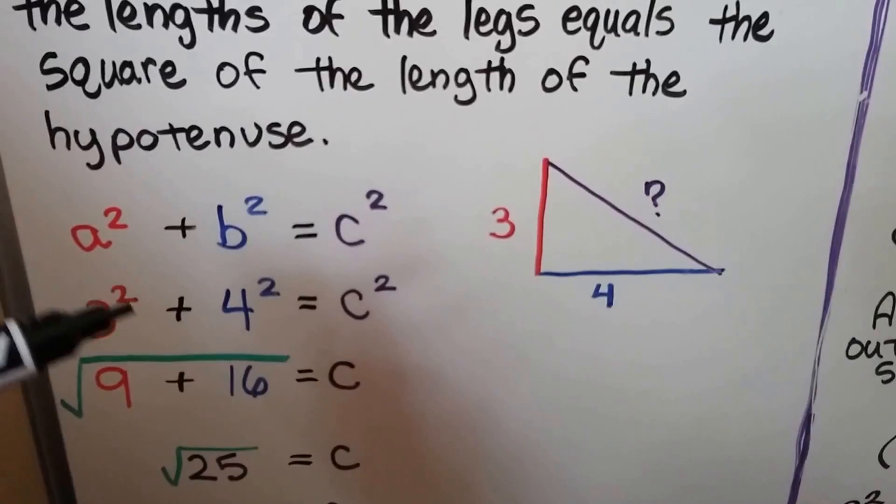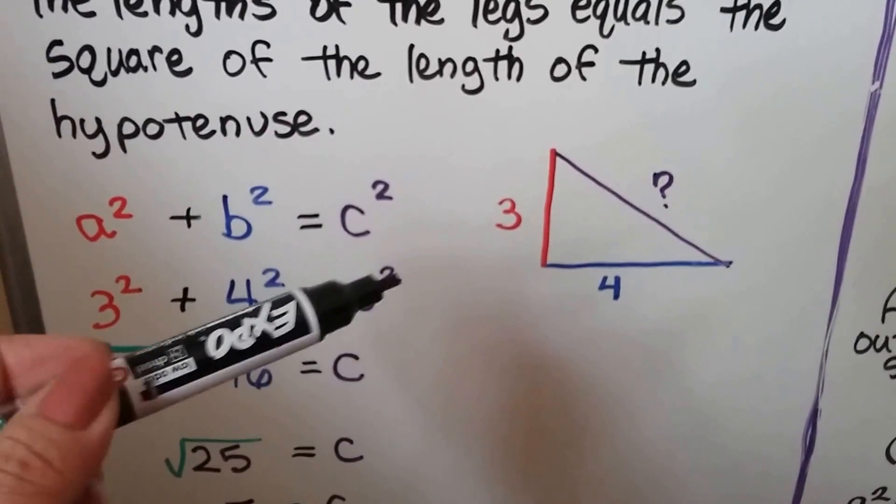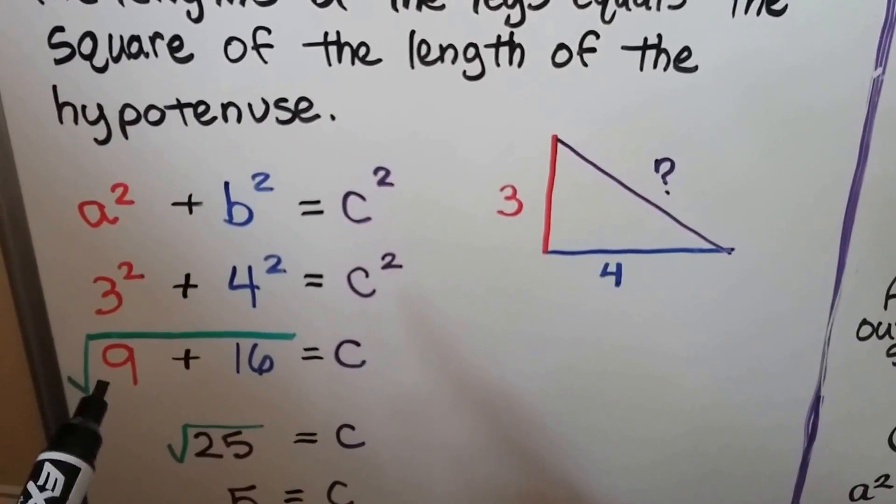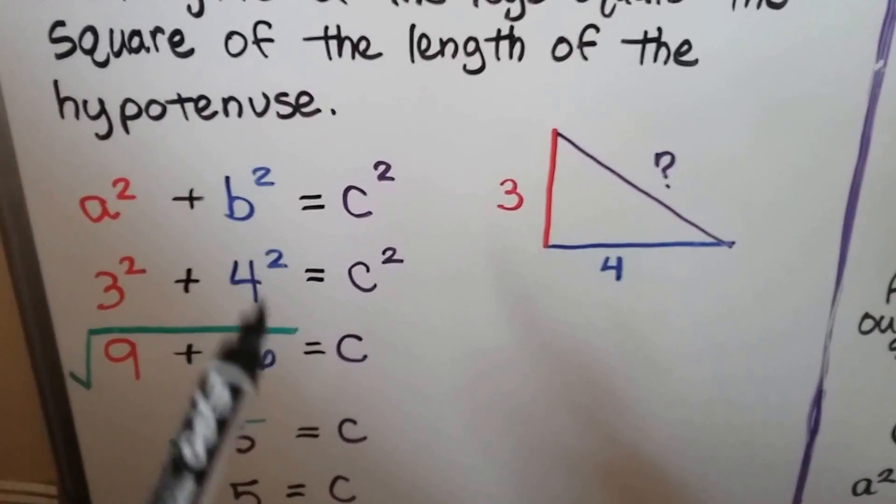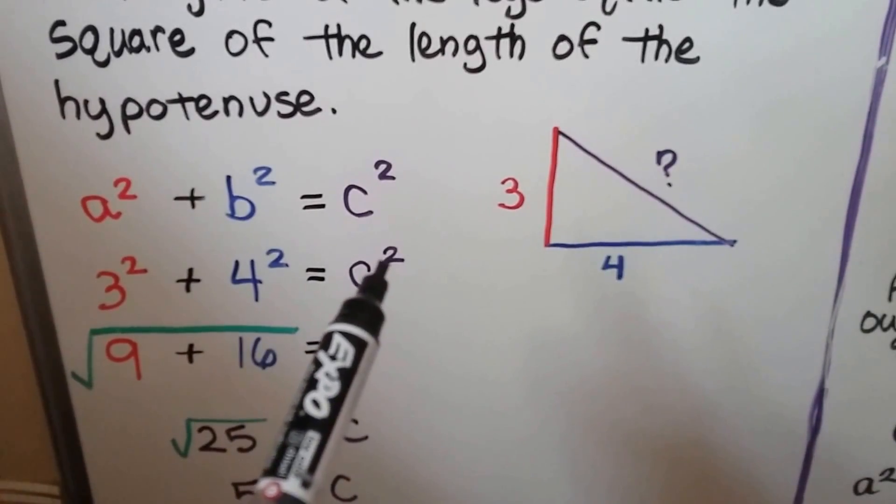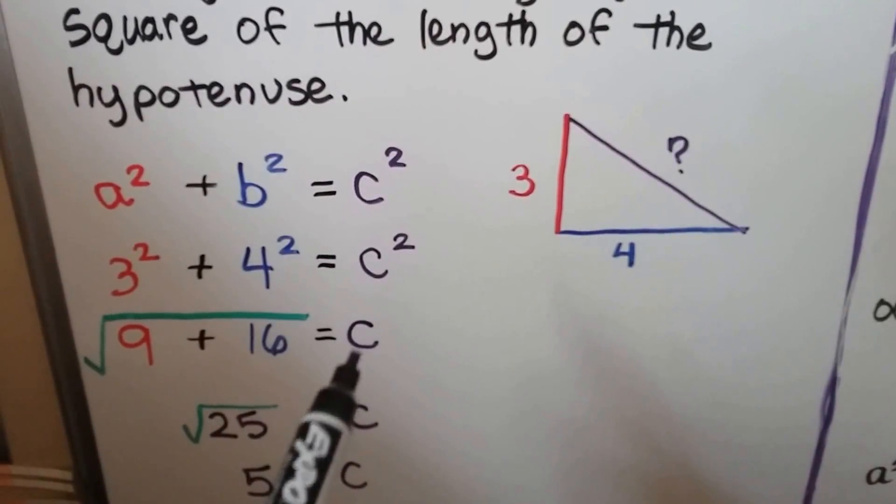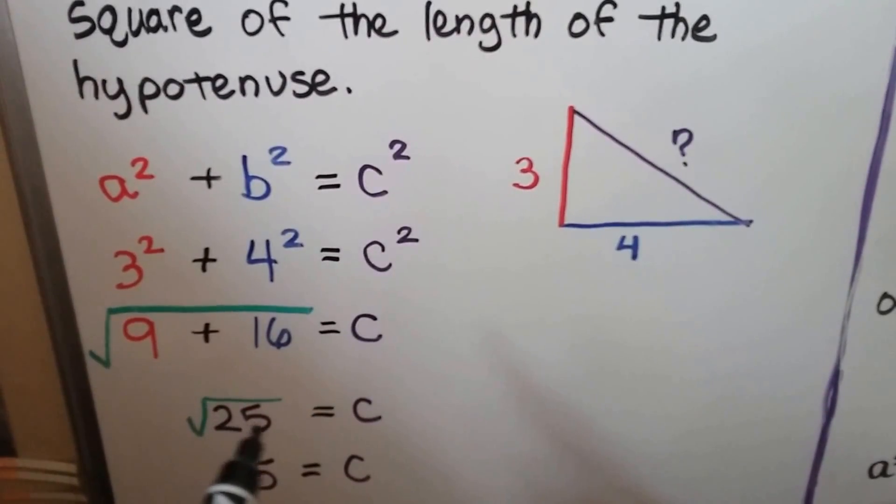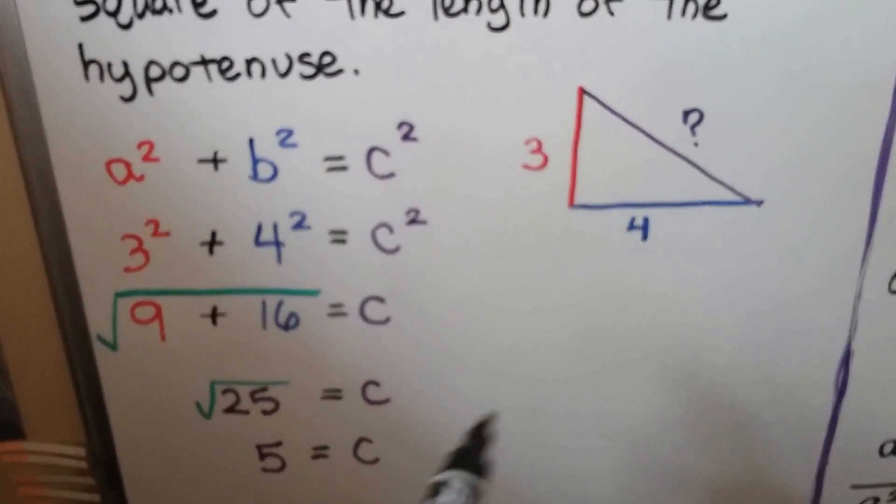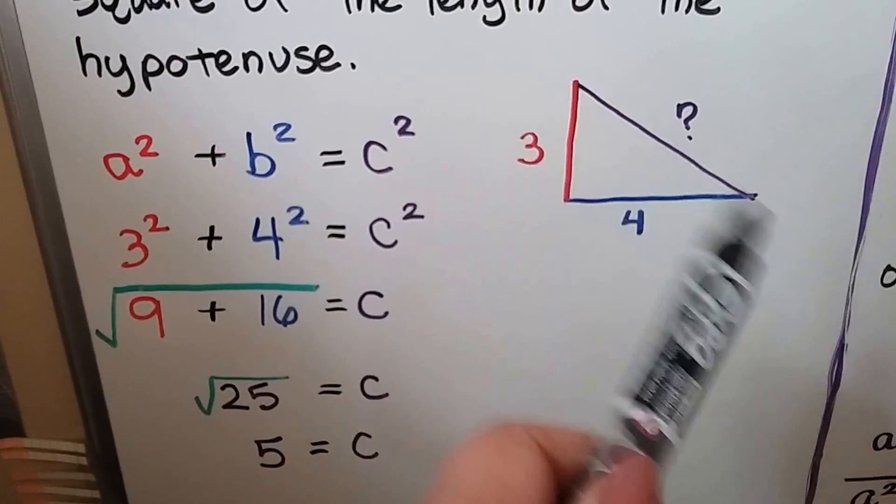We substitute them in, so we've got 3 squared plus 4 squared equals c squared. 3 squared is 9, 4 squared is 16. We remove this little 2 exponent by putting a radical on the other side of the equal sign. So we have the square root of 9 plus 16 equals c, which means the square root of 25 equals c, which means the length of the hypotenuse c is 5.